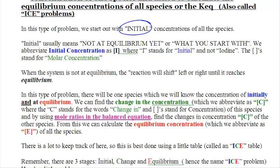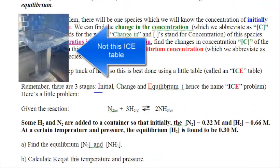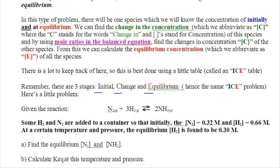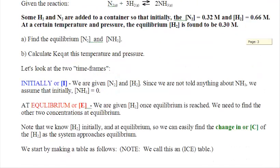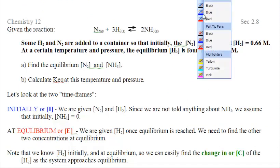This type of problem is called an ICE table, ICE. I is for initial, C is for change, and E is for equilibrium. Let's do one or two of these together, and I think you'll see that there's a real pattern here, and this is not going to be a huge stretch of your ability at all, even though this is going to be totally new.